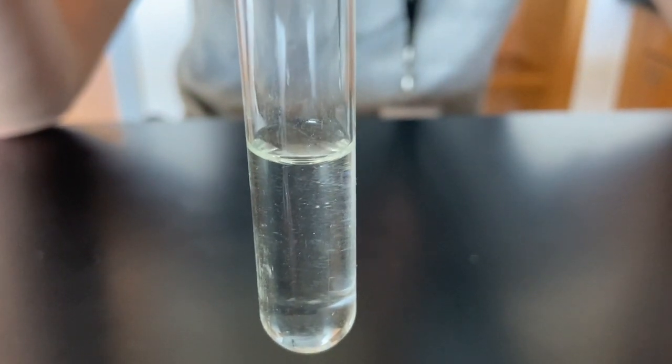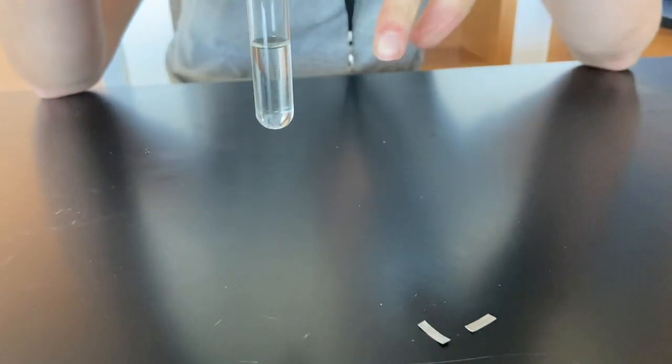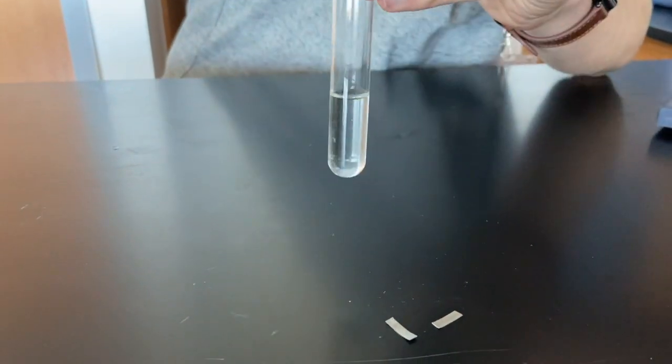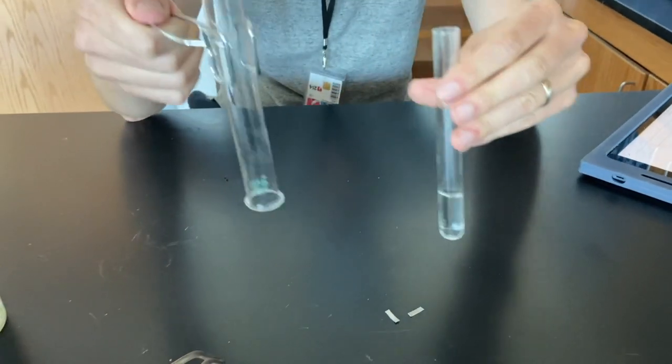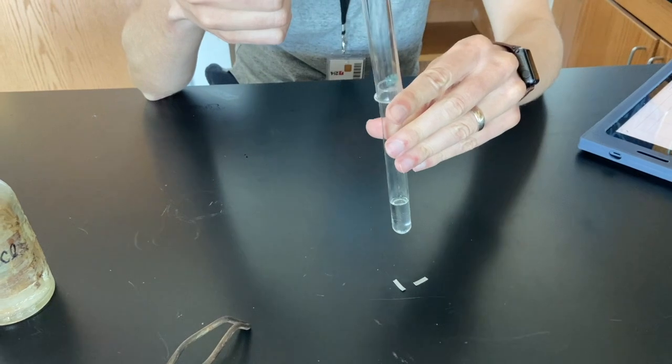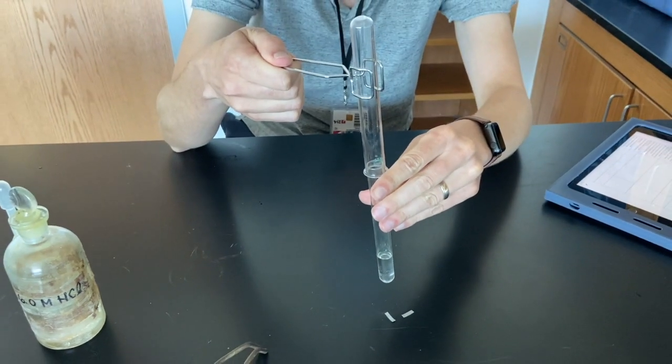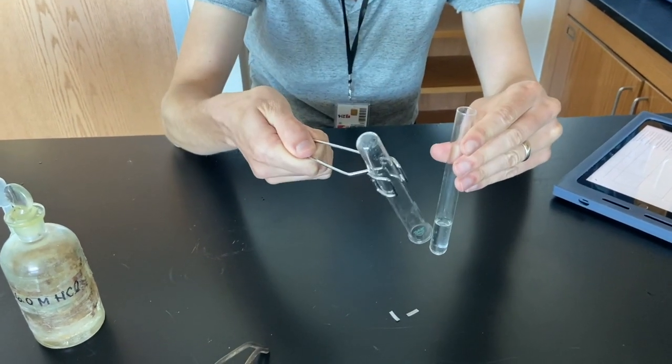Now what's going to happen is I'm going to put the magnesium ribbon, the two pieces, into the test tube. And I'm going to take a second test tube and put it over the top so I can collect the gas that's going to be emitted from this reaction.